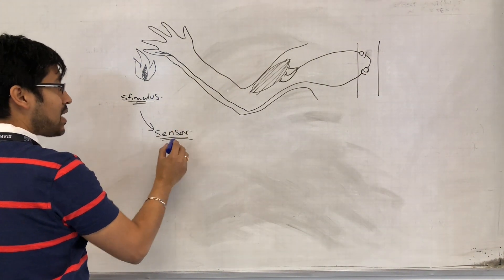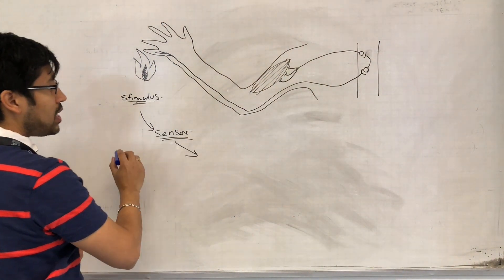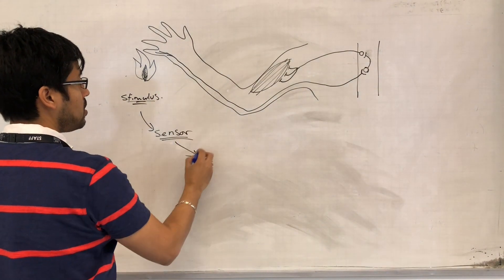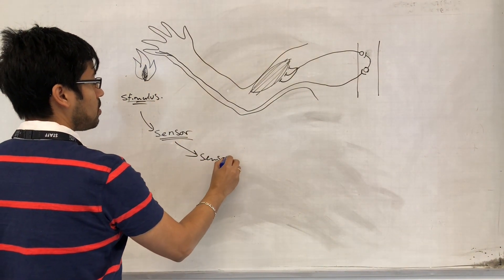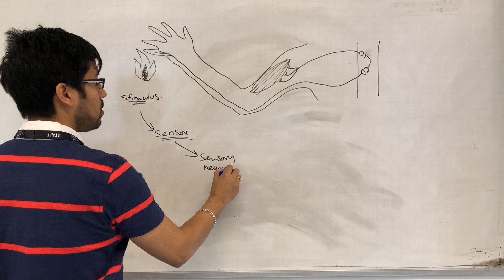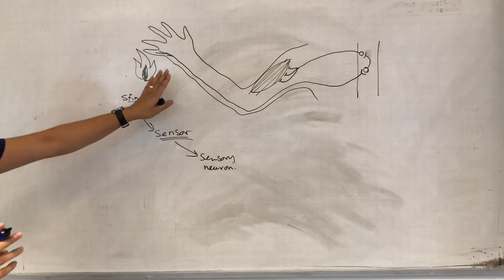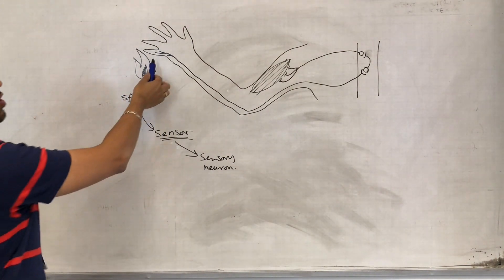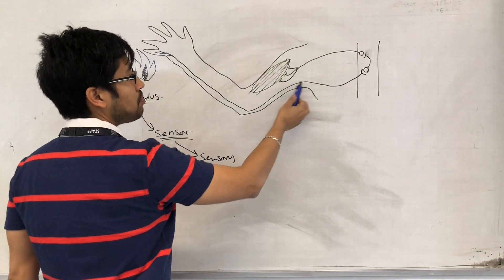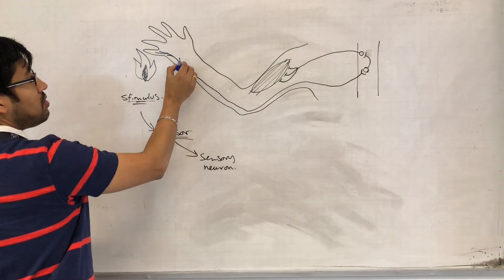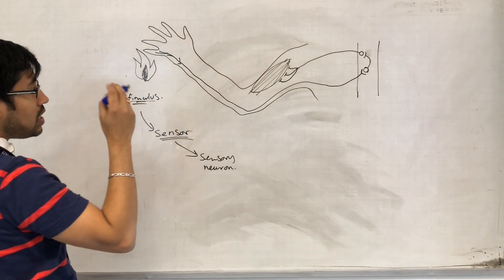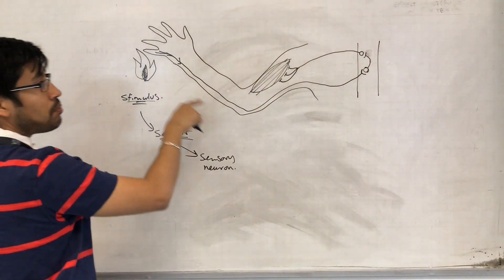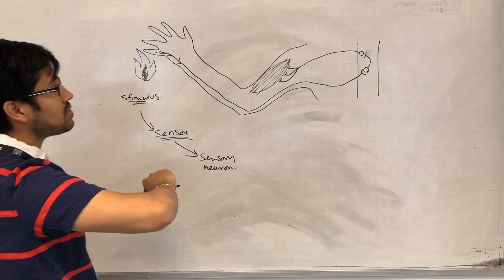Once the sensor detects the change, it stimulates the sensory neuron. So this is part of our peripheral nervous system. It's a neuron that is responsible for collecting information or collecting impulses from sensors and then passing them down to the central nervous system.